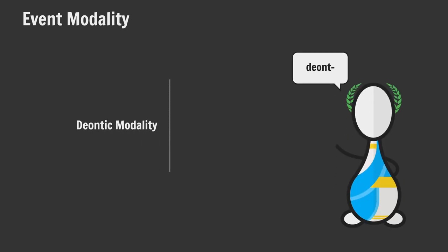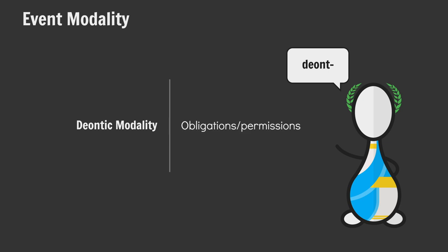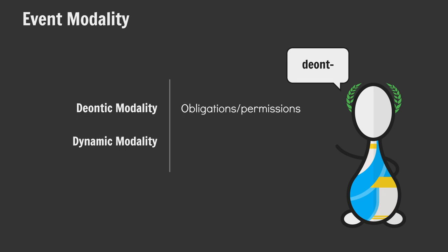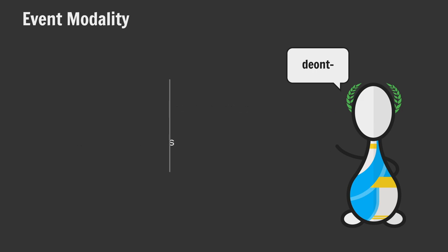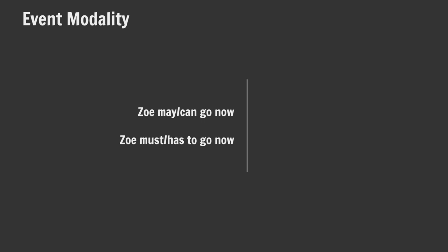Now for the right branch. Event modality is concerned with events that have not taken place but potentially might. Deontic modality, from the Greek for 'it is needed or necessary,' deals with obligations and permissions coming from an external source, like another person. On the other hand, dynamic modality deals with ability and willingness coming internally from the speakers themselves. Compare: 'Zoe may/can go now' and 'Zoe must/has to go now.' The first suggests that Zoe has been given permission to go — permissive modality.